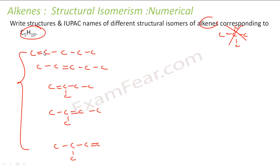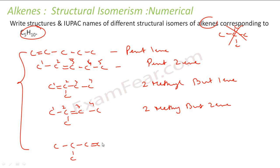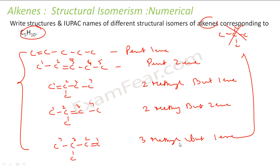These are my structures. The first will be pent-1-ene. The second will be pent-2-ene. The third will be 2-methylbut-1-ene — at second position I have a methyl, and the longest chain is but with a double bond at position 1. The fourth will be 2-methylbut-2-ene. The fifth will be 3-methylbut-1-ene. These are my five possible structural isomers.